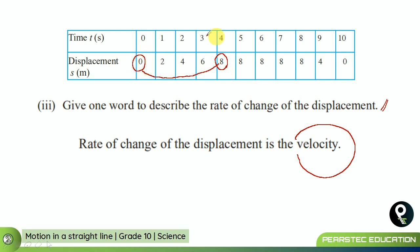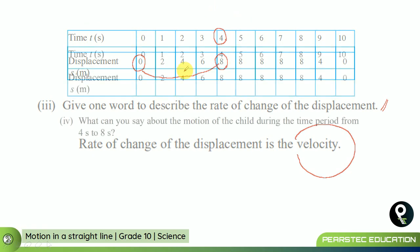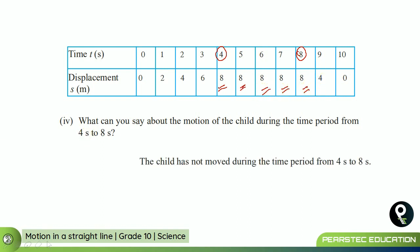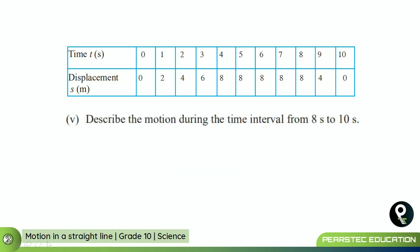What can you say about the motion of the child during the time period from 4 seconds to 8 seconds? Looking at the displacement — has he moved anywhere? No. The child has not moved during the time period from 4 seconds to 8 seconds; the displacement stays at 8, 8, 8, 8, 8 — he was standing still. Now, describe the motion during the time interval from 8 to 10 seconds. The displacement goes from 8 down to 4 down to 0 — it is going in the minus direction.